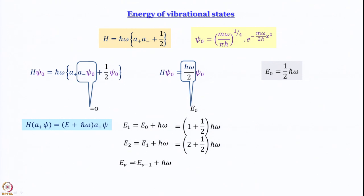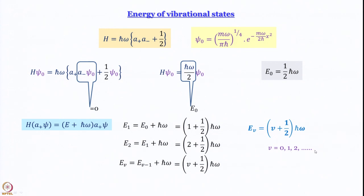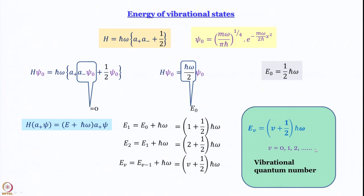In general, E_V = E_{V−1} + ℏω, which gives E_V = (V + 1/2)ℏω. V is the vibrational quantum number and ranges over 0, 1, 2, 3, 4, … up to infinity. This is the most general form of the energy of a quantum harmonic oscillator: E_V = (V + 1/2)ℏω. We have been able to find the energy of not only the lowest energy state but all energy states of the quantum harmonic oscillator simply by using the ladder operators.